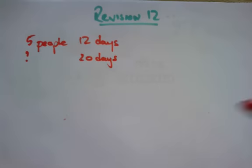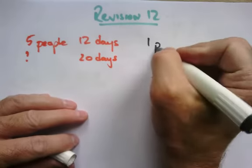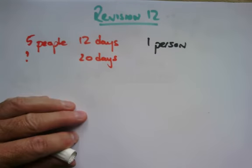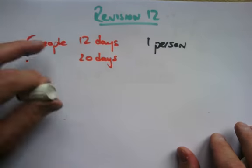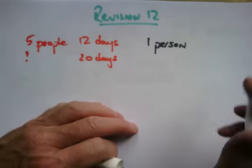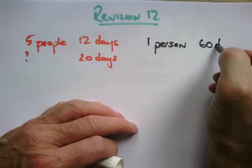Well there's some really nice ways of doing this. The unitary method says this: What would it take one person to do? Five people take 12 days, so it would take five times longer, 60 days.